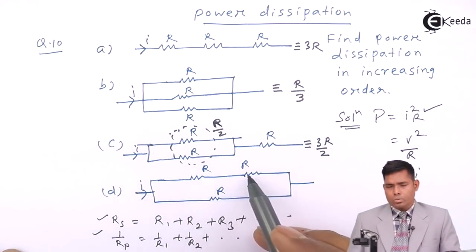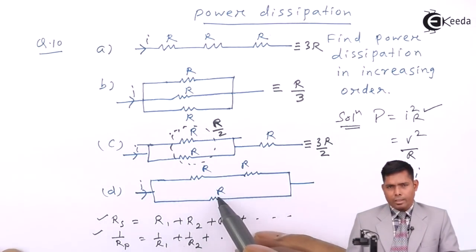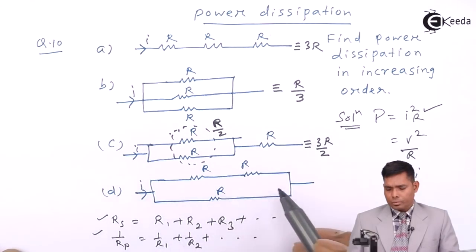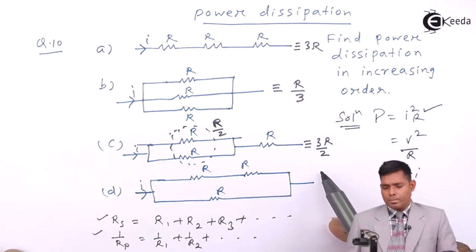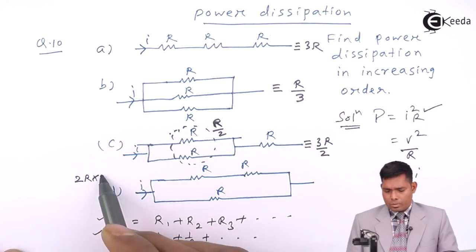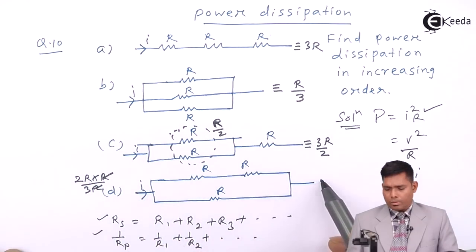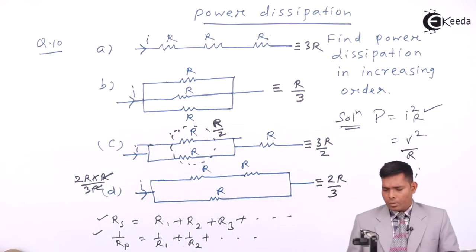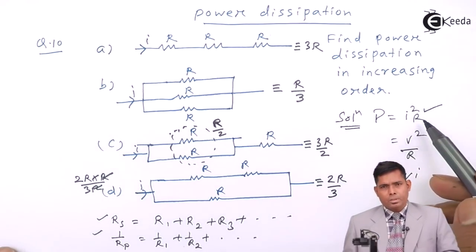For the fourth combination, the two in series give 2R, and that is in parallel with R. Using the product-over-sum formula: (2R × R)/(2R + R) = 2R/3. Since current i is the same, power is proportional to R — the combination with the highest equivalent resistance also has the highest power.